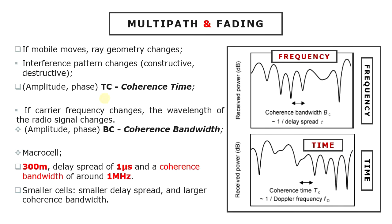If the mobile moves from one place to another, then the ray geometry changes. So the interference pattern changes between constructive and destructive. Fading is therefore a function of time, as shown in this figure. The amplitude and phase of the received signal vary over the time scale called the coherence time, TC. Faster mobiles move through the interference pattern more quickly, so their coherence time is correspondingly less.